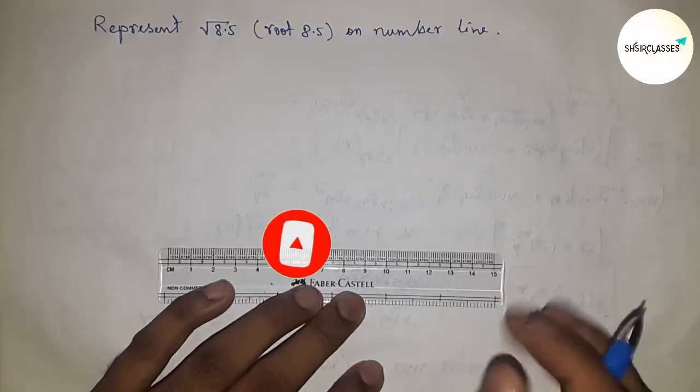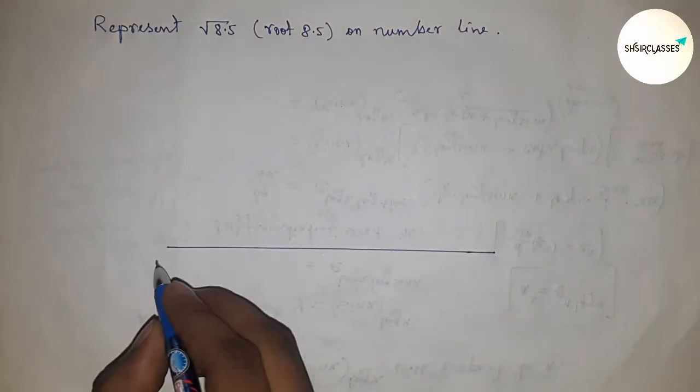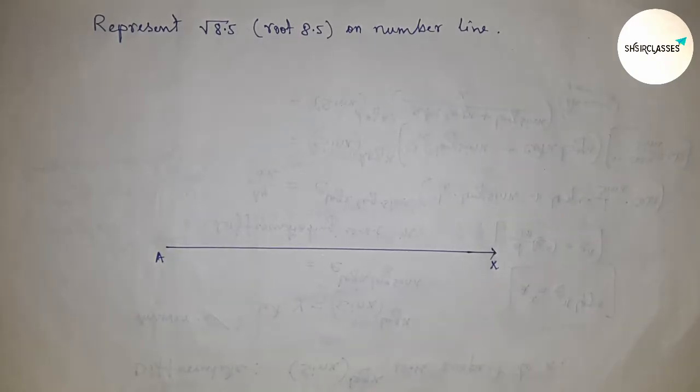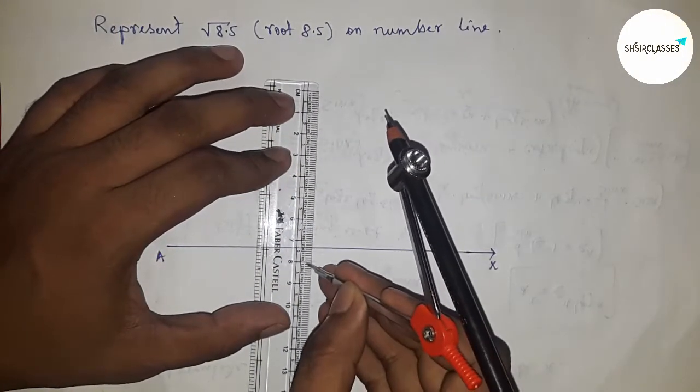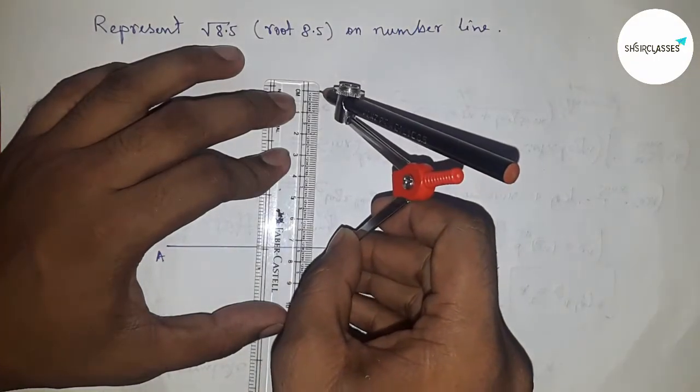First of all, draw a line of any length. This is line AX. Next, take length 8.5 using a compass.